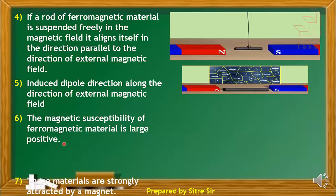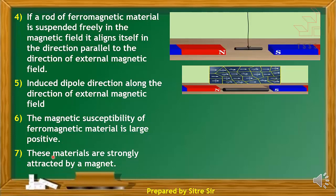These ferromagnetic materials are strongly attracted by a magnet. A magnet strongly attracts ferromagnetic substances, and this property is strongly exhibited when a magnet is applied to ferromagnetic materials.